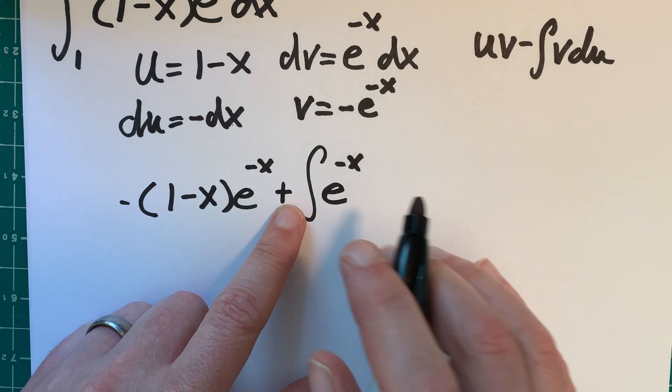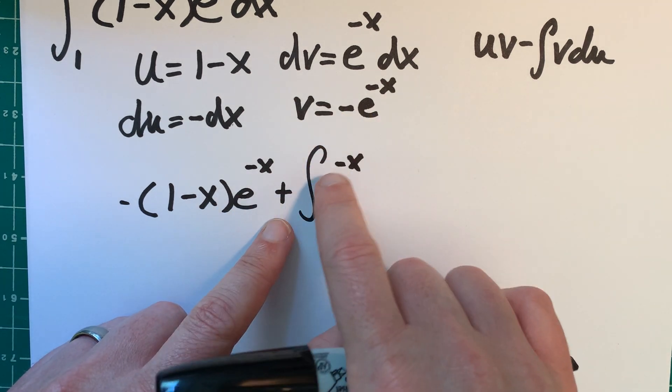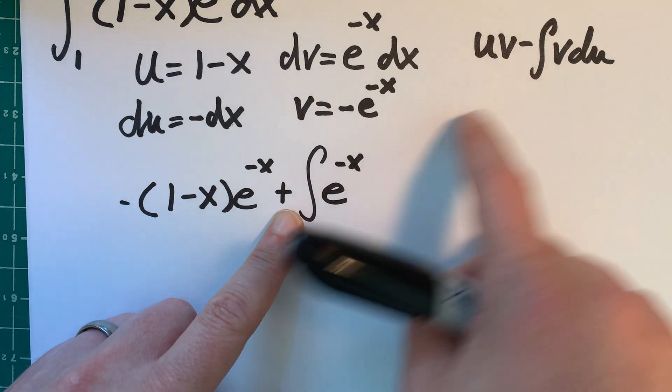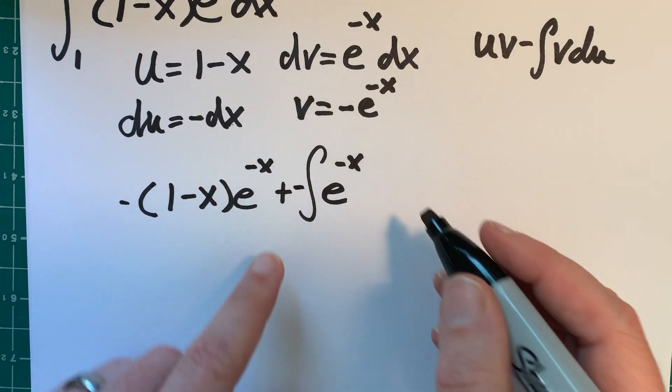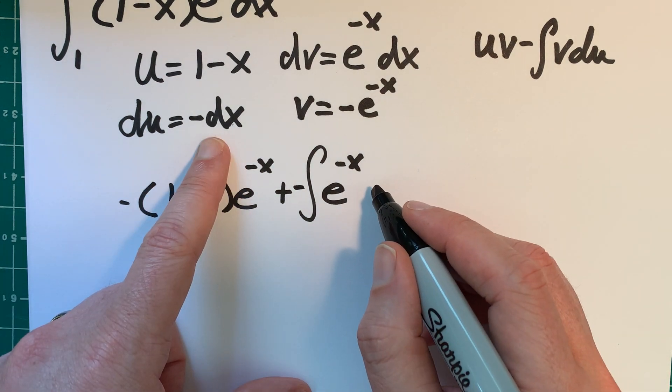So I think that was negative, negative from the formula, positive. So actually, it's negative again. And then dx. Yeah, that should do it.